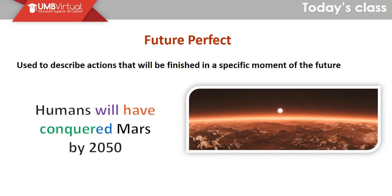So future perfect — what is the difference with this? Before we were talking about future continuous, and now this future perfect is very related to the previous one, but the key point of difference is that this subject is focused on describing actions that will be finished at a specific moment in the future. So: 'Humans will have conquered Mars by 2050' — we are talking about an action that will happen and be completed later, in a specific time.